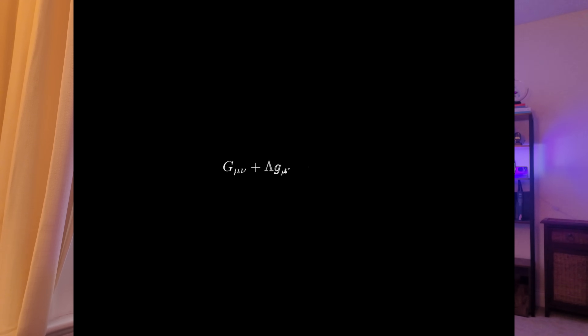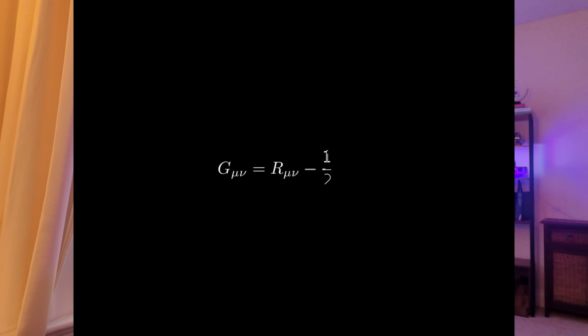So let's look at G mu nu. This is called the Einstein tensor, and it encodes how spacetime is curved. It's built from two key pieces: the Ricci tensor R mu nu, which measures how volumes distort as they move through spacetime, and the Ricci scalar R, which is kind of like the total curvature at a point. Then there's the metric tensor G mu nu, which tells you how distances are measured. This combo — the Einstein tensor — is divergence-free,